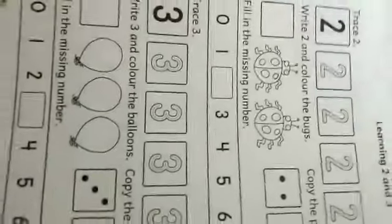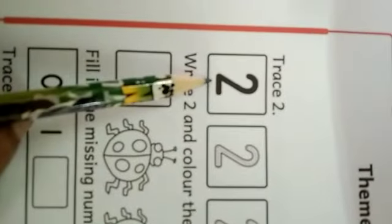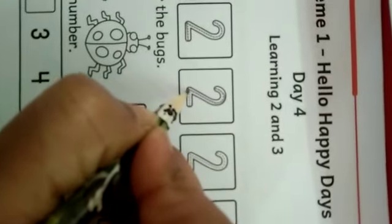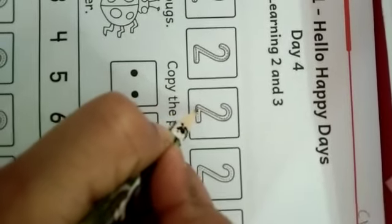So today we are going to revise number 2 and 3. So our first number is 2. So what will we do? We will trace these dots and complete number 2. So slowly, slowly join these dots and trace all the 2, like this.